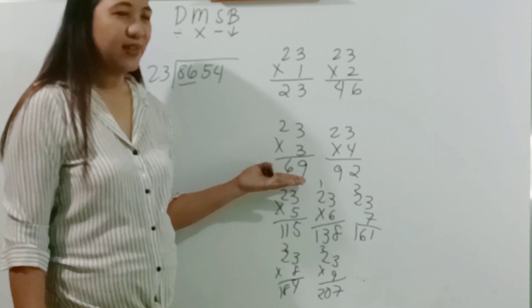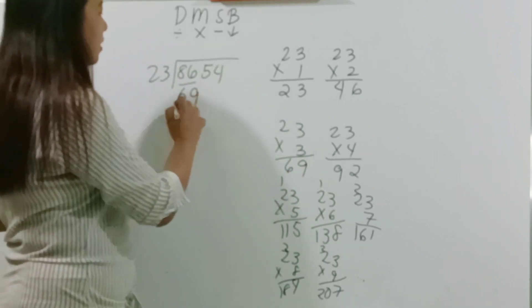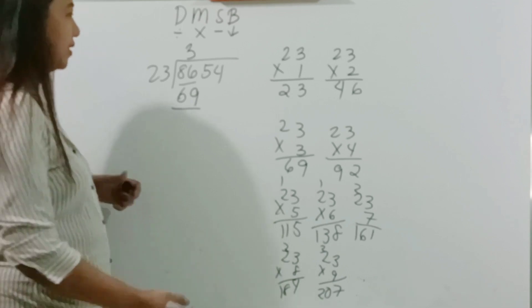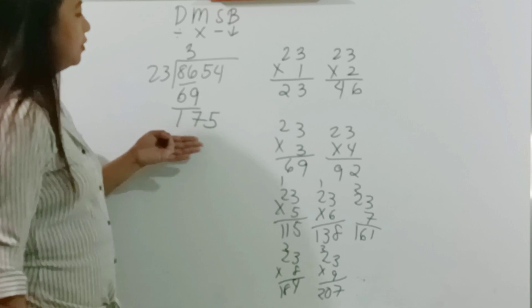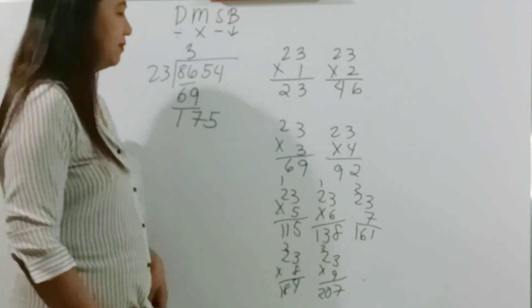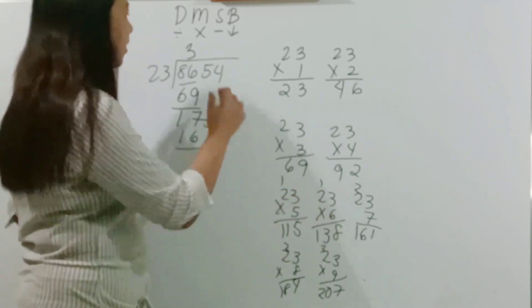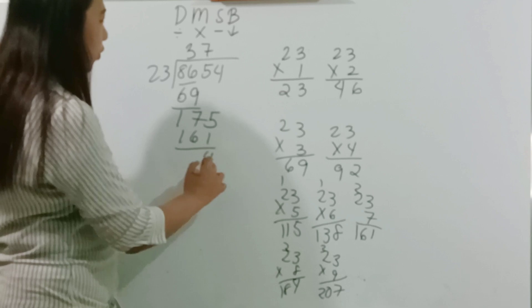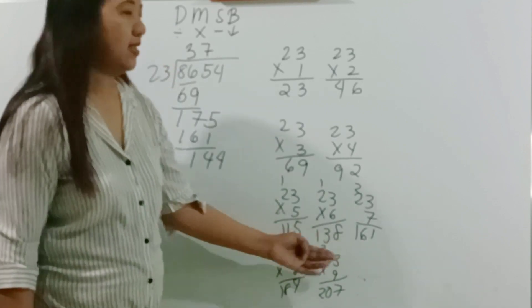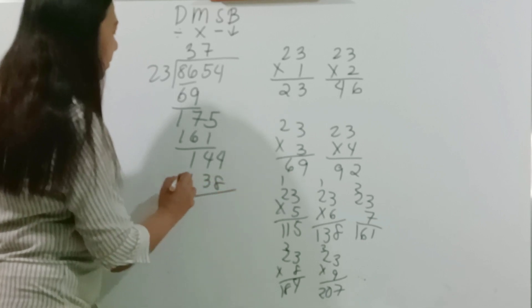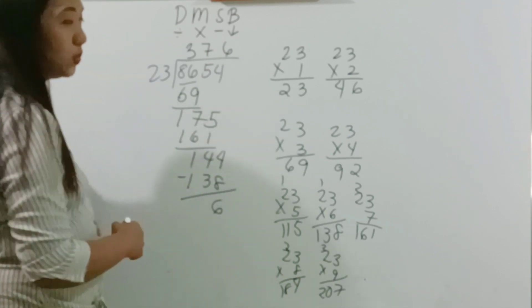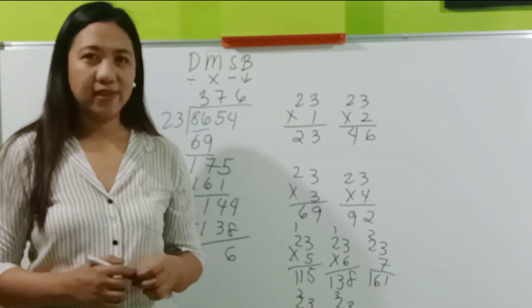So, just like what we did in addition method. You have to look into a number which is less than or equal to 86. So, we have 69. Right? So, you just copy 69. And then copy the multiplier. 7. Let's now subtract. You have to look into the list again. Which is less than or equal to 175. This is 161. And then copy the multiplier. 7. Subtract. 4, 1. Bring down. We have 138. Just copy 138. And then the multiplier. 6. Subtract. Did we arrive with the same answer too? Yes, we did.